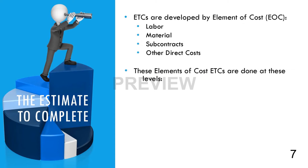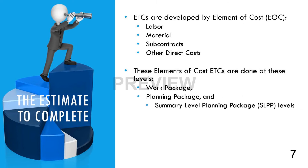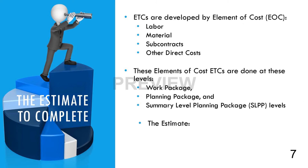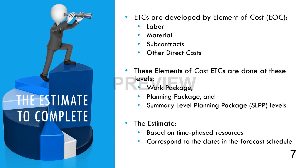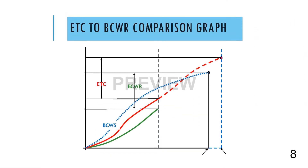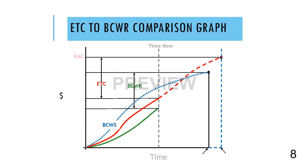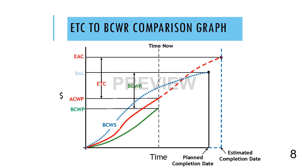This is done at the Work Package, Planning Package, and Summary Level Planning Package levels. This estimate is based on the available time-phased resources and must correspond to the dates in the forecasted schedule — the time-phased ETC must correspond to the time-phasing of the forecasted work scope. Putting these concepts together, the ETC is the difference between the EAC and the cumulative ACWP. This value represents the forecasted costs to complete the work remaining, and the budget value of that work is calculated by subtracting the cumulative BCWP from the BAC.